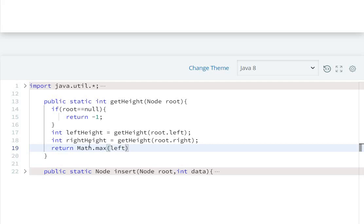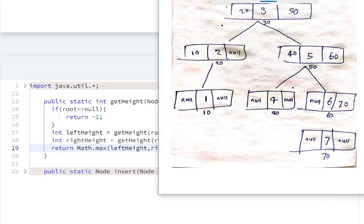So let's take an example. First of all we have here root 30. So first of all, 3 will check on the left, so we'll go left where there is 20.